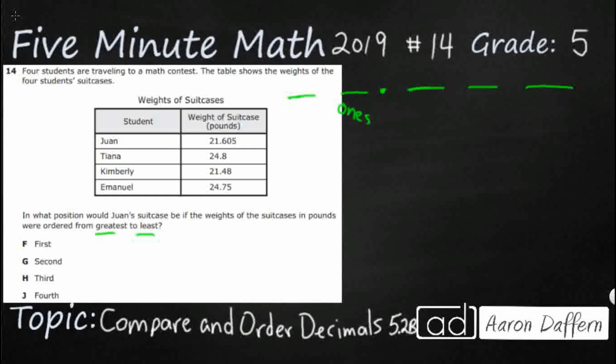So you're going to get your ones right there. Then to the left of the ones is your tens. And then if we were to continue we would go hundreds, thousands, ten thousands, and so on.